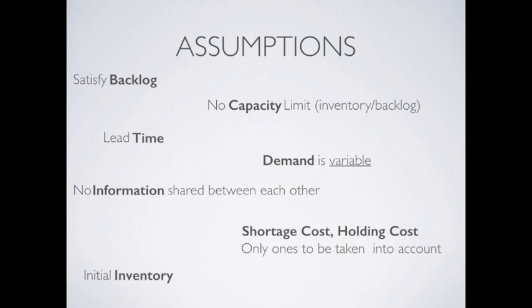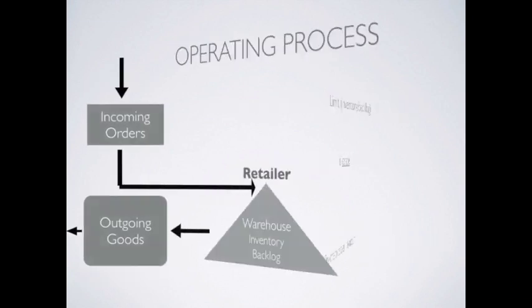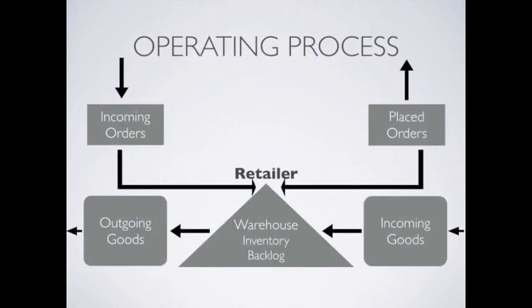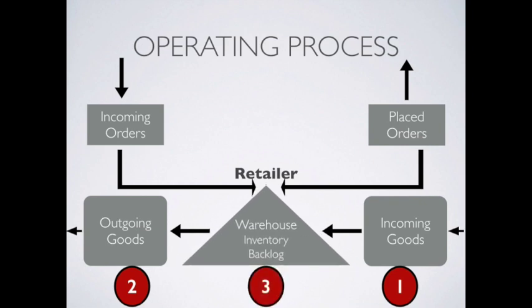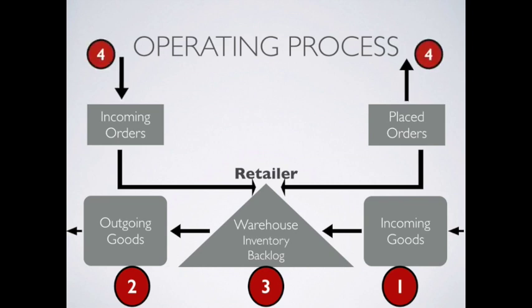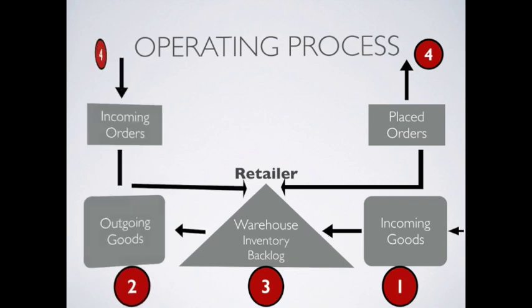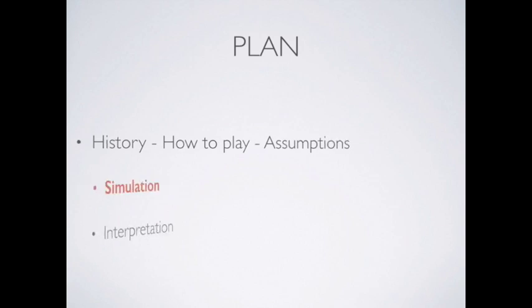Now, let's dig into detail for the operating process. Every company in this supply chain has the following operating process in every period. First, they receive products from upstream, in other words, these incoming goods. Then they are shipping products, meaning the outgoing goods according to the order from downstream. They will have to manage the inventory and backlog as I said before. But most importantly, they will have to forecast demand based on the order from downstream company, and place order to the upstream company according to our prediction and inventory situation. Now, we can move on to the second part, the simulation.